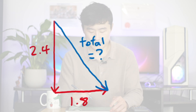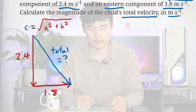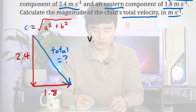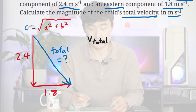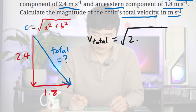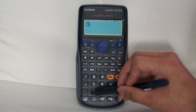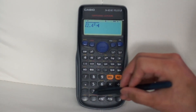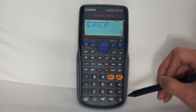We'll use the same formula to figure out the total velocity, or v total, which in this case will be the length of the hypotenuse. The v total will equal the square root of 2.4 squared plus 1.8 squared. If we plug that into our calculator, we'll get an answer of 3 meters per second.